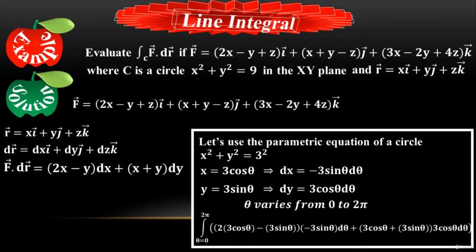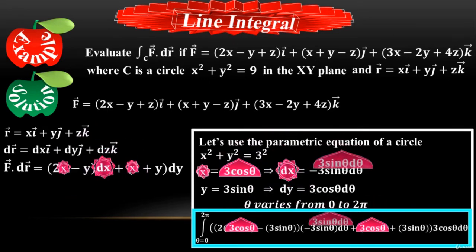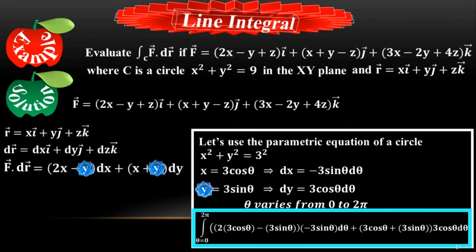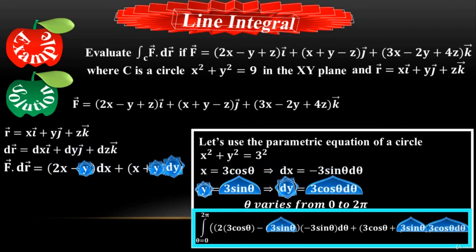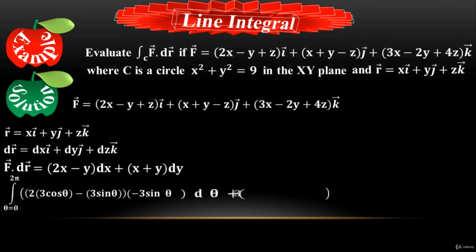So the limits of integration are from 0 to 2π. I substitute the values of x, y, dx, and dy: x is replaced by 3cosθ, dx by −3sinθ dθ, y by 3sinθ, and dy by 3cosθ dθ. That is how I obtained the substituted equation.